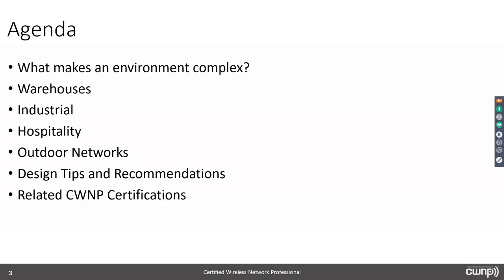Let's talk about the agenda of this webinar. First, what makes an environment complex — why would one environment be complex when another one is not? Then we'll talk specifically about warehouses, industrial, hospitality and outdoor networks. I'm separating warehouses and industrial because warehouses have some pretty consistent challenges, while industrial here refers to the manufacturing environment — the process where products are made and produced. Then we'll talk about hospitality, covering hotels and conference facilities. I'll give you some design tips and recommendations.